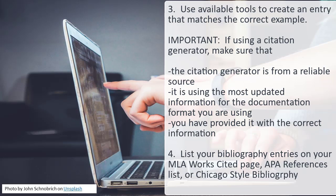Others include Citation Machine and EasyBib. Microsoft Word contains its own built-in citation generator as well. It's not cheating or plagiarism to use a citation generator. However, you need to use a citation generator wisely. Assuming that a citation generator will guarantee that a bibliography is correct often leads to mistakes. To avoid mistakes, check that the citation generator is from a reliable source and is using the most updated information for the documentation format you are using.